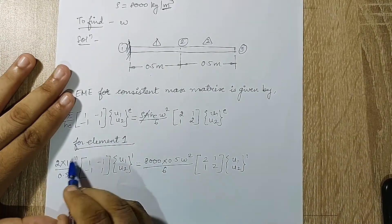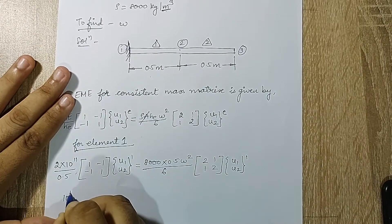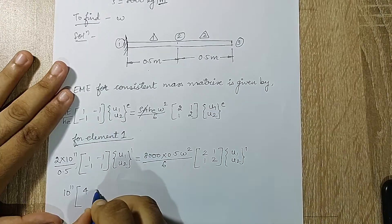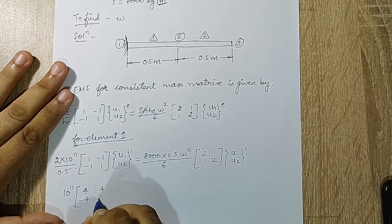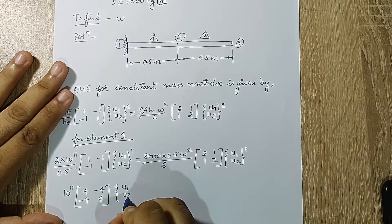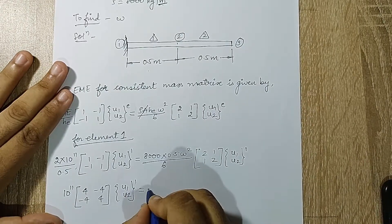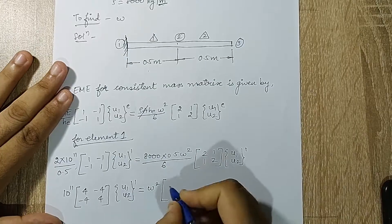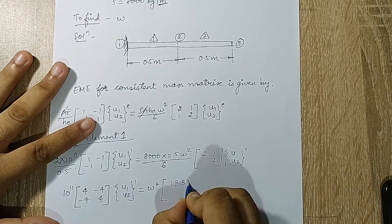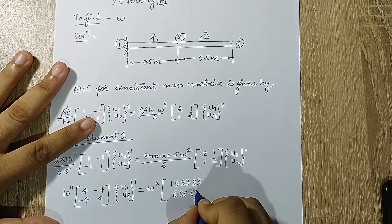After solving element 1, the stiffness contribution yields a factor of 10¹¹ with matrix entries [4 -4; -4 4], and the mass matrix contribution gives ω² multiplied by [1333.33, 666.67; 666.67, 1333.33] at DOFs u1, u2.